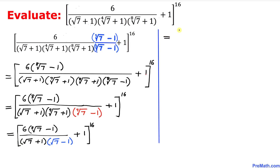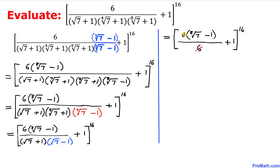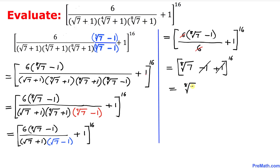We can now write this as 6 times the eighth root of 7 minus 1 on top, divided by 6, and then plus 1, all to the power 16. We can see that the 6 and 6 cancel each other out, so we are left with the eighth root of 7 minus 1, plus 1, to the power 16. The negative 1 and positive 1 cancel each other out, so we are simply left with the eighth root of 7, to the power 16.